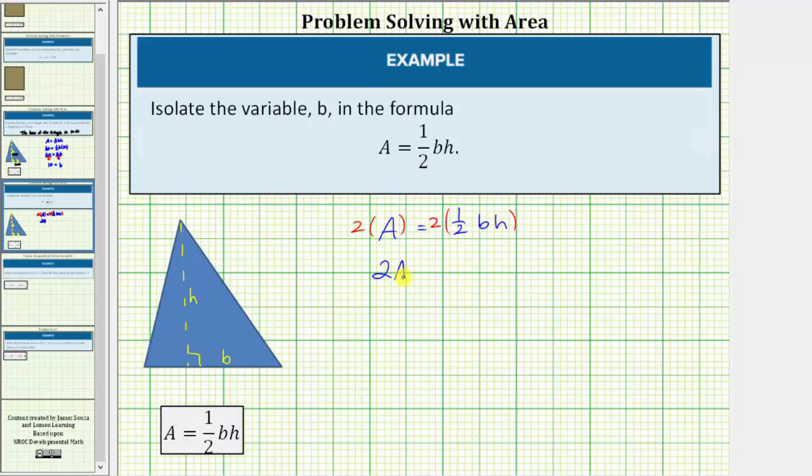That would give us 2A is equal to, well 2 times one-half is equal to 1. Therefore, the right side is just BH or B times H.